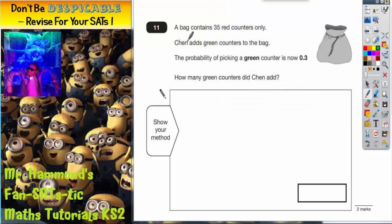Question 11. A bag contains 35 red counters only. Chen adds green counters to the bag. The probability of picking a green counter is now 0.3. How many green counters did Chen add?